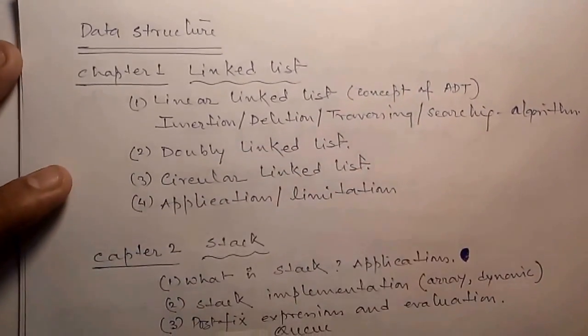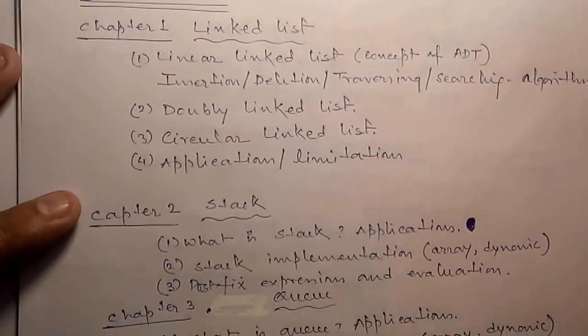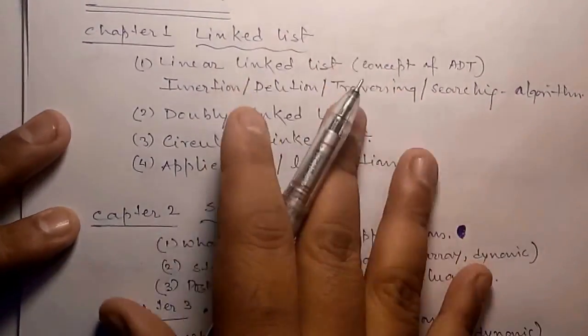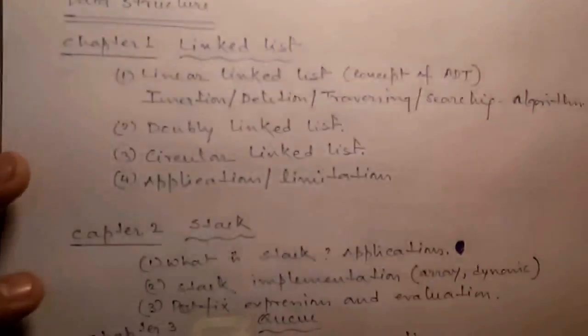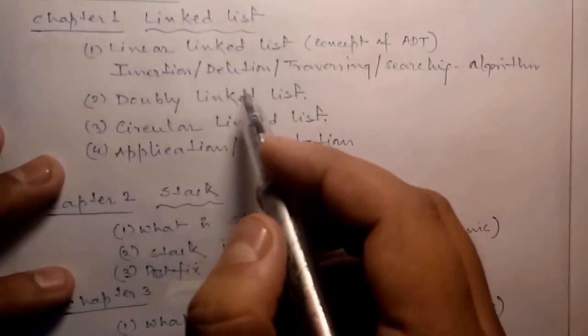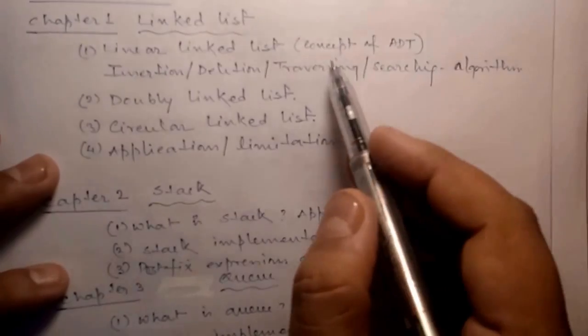Hello friends, now in this playlist we will discuss data structures. There are 10 chapters. In Chapter 1, we will discuss linked lists: linear linked list, concept of ADT (abstract data type), insertion, deletion, traversing, searching algorithms, and different types of algorithms.